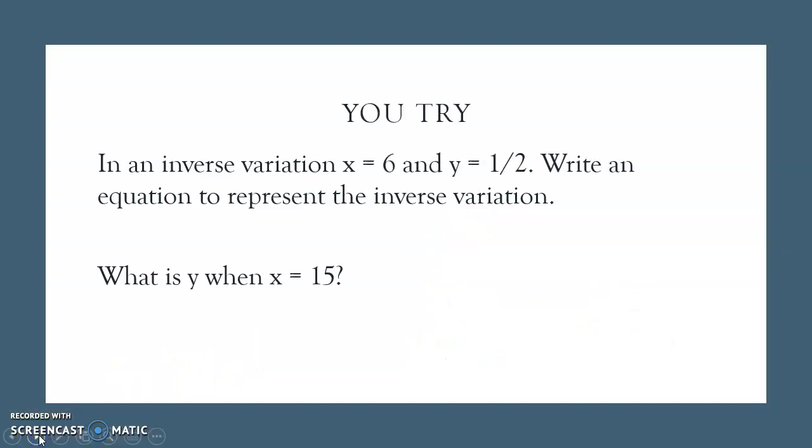Here's one for you to try. I'm going to encourage you to pause the video and give it a try, and then when you return, the answer will be there. So for this example, x times y would give you 3 because 6 times 1 half is 3. That means my equation for this inverse variation is y equals 3 divided by x. Then if I plug in x equals 15, I get 3 over 15, which reduces to y equals 1 fifth if I divide both of those numbers by 3.